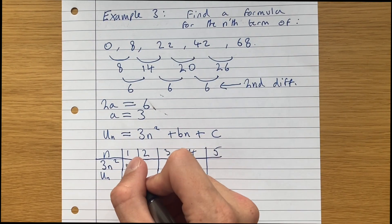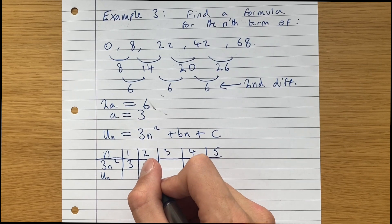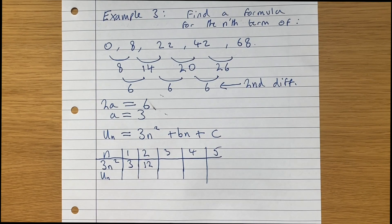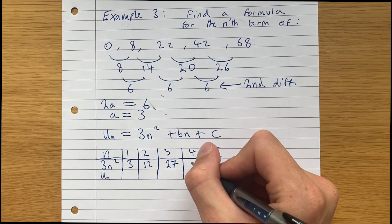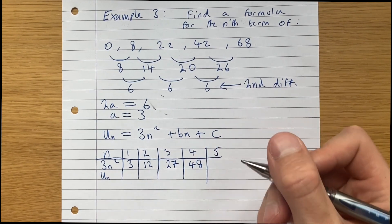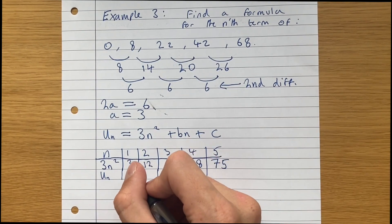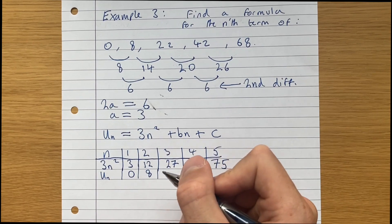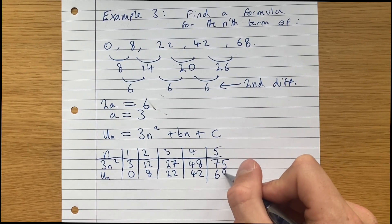So 3n squared would just be 3 times 1 squared is 3, 3 times 2 squared is 12, 3 times 3 squared is 27, 3 times 4 squared is 48, and 3 times 5 squared is 75. And our sequence is 0, 8, 22, 42, 68.